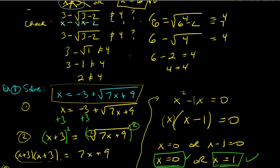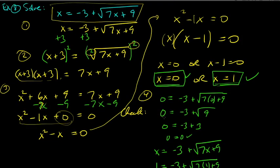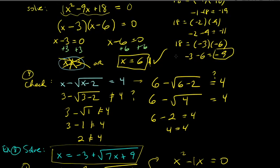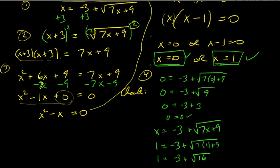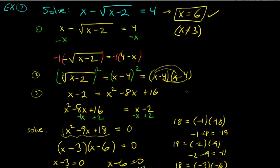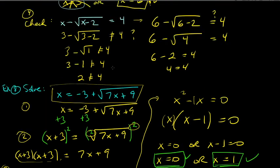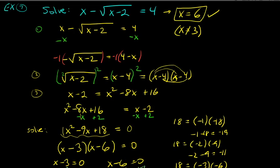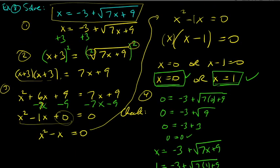Both answers are correct — no extraneous solutions this time. The equation has two legitimate solutions: x equals 0 or x equals 1. Just because you get a quadratic with two solutions doesn't mean one has to be wrong — they can both be correct, both be wrong, or one of each. Good luck with the homework.